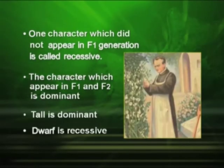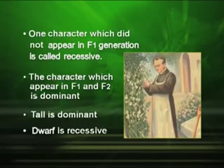Now we are in a position to define two very important terms — dominant and recessive. The character which did not appear in the F1 generation is called recessive, and the character which appeared in F1 and F2 is the dominant. So in the previous experiment, can you tell which is dominant and which is recessive? Yes — it is tall, which appeared in the F1 generation, so it is the dominant character. Short appeared only in F2, so it is the recessive character.